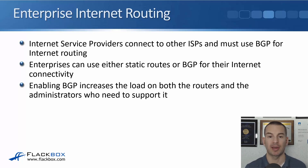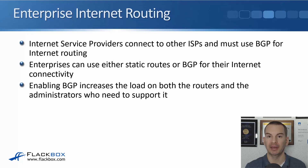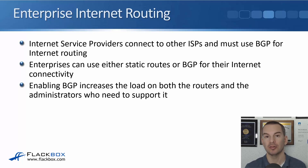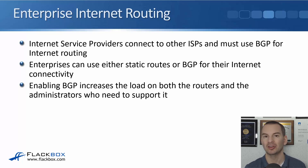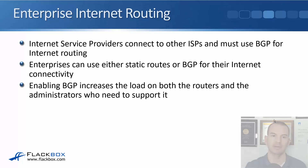ISPs connect to other ISPs and because of that they have to use BGP for internet routing — BGP is how routing works on the internet. Enterprises connected into ISPs can use either static routes or BGP for their internet connectivity. Enabling BGP at the enterprise increases the load on the routers and on the administrators, because it's more complicated to configure BGP than it is to use static routes.